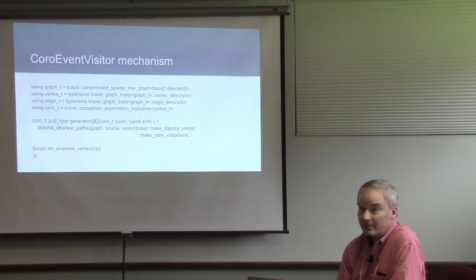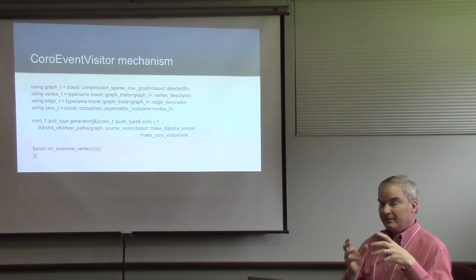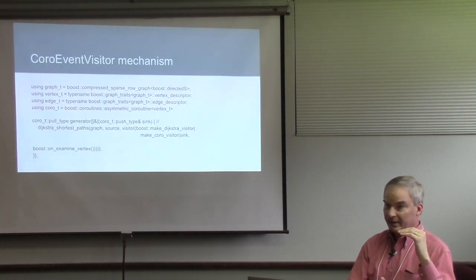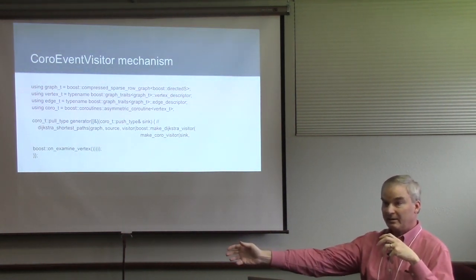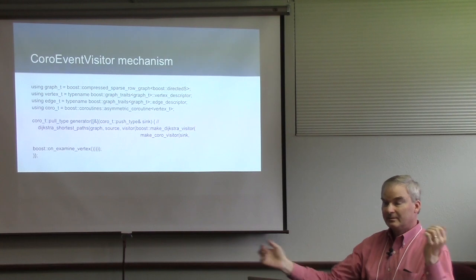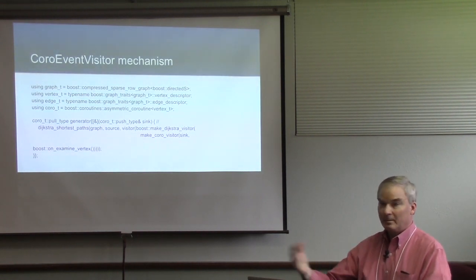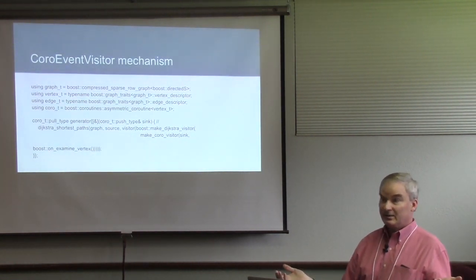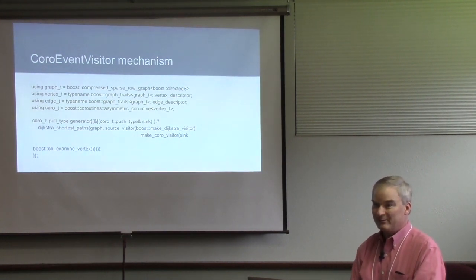So what are we trying to get to? Instead of having to hand-write a struct for each visitor, these visitors don't have business logic — they only pass vertex data through to a consumer via the coroutine. So you can say you're going to use a coroutine for this visitor, use the helper function, and all your business logic lives in the driving loop that pulls from the coroutine.